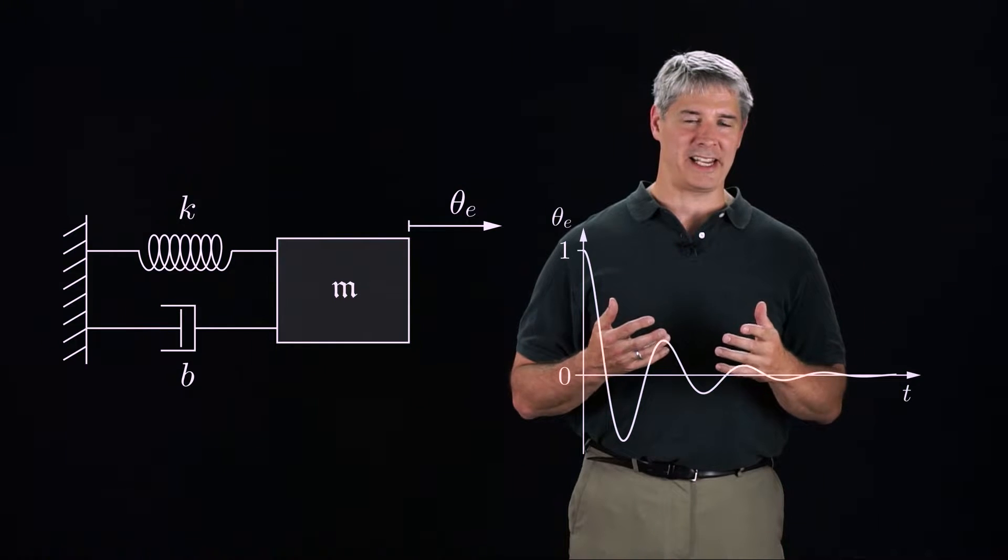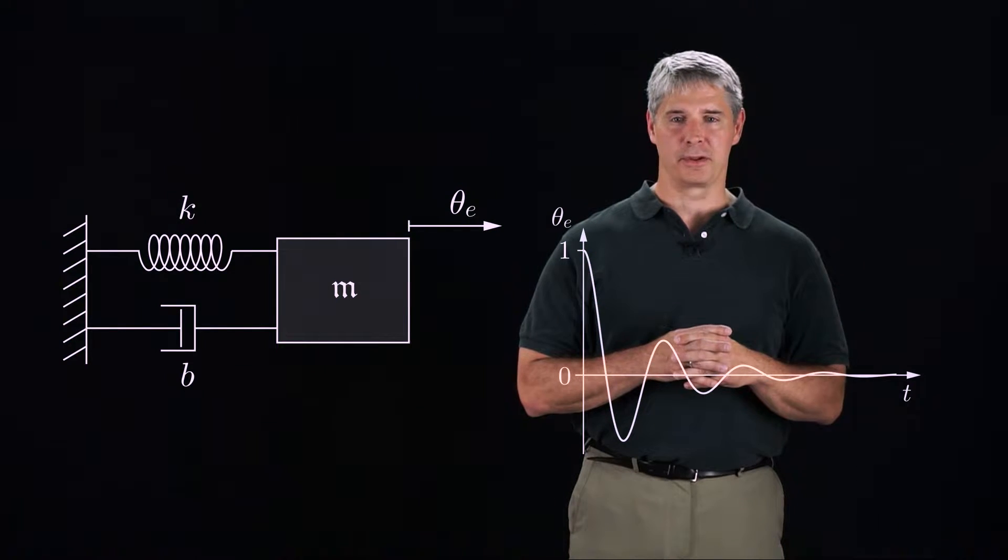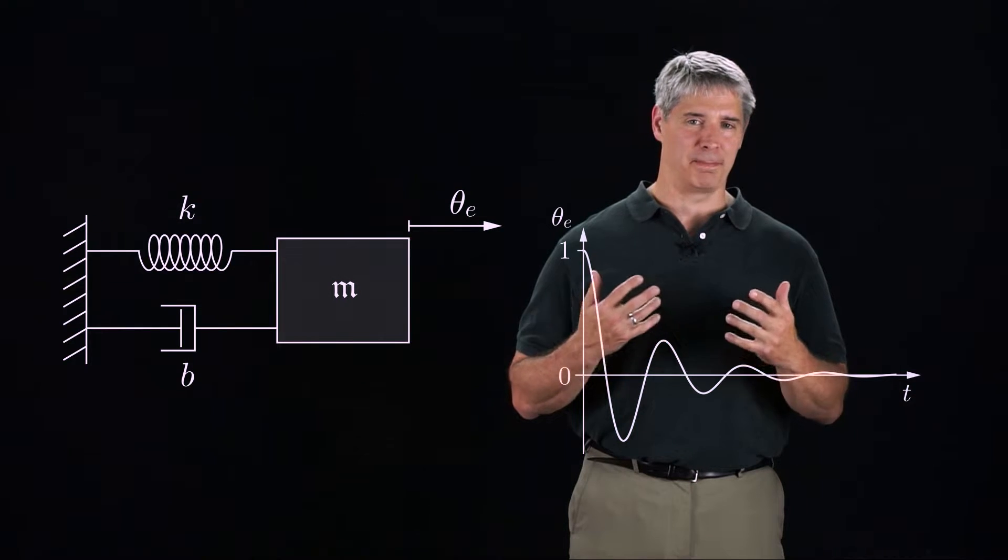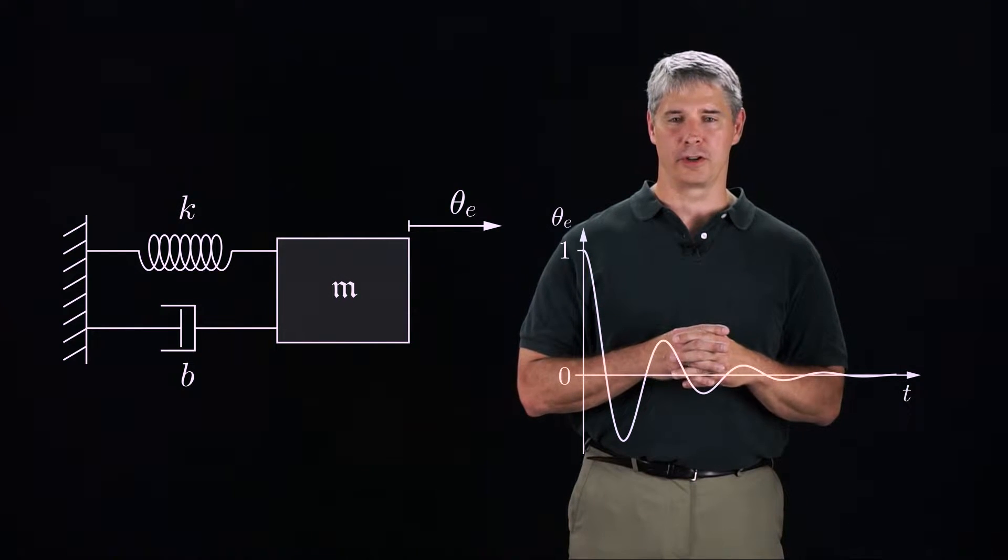If we choose the stiffness K to be large, the spring pulls the error toward zero faster, and if we choose the damping constant B to be large, we can get rid of overshoot and oscillation.